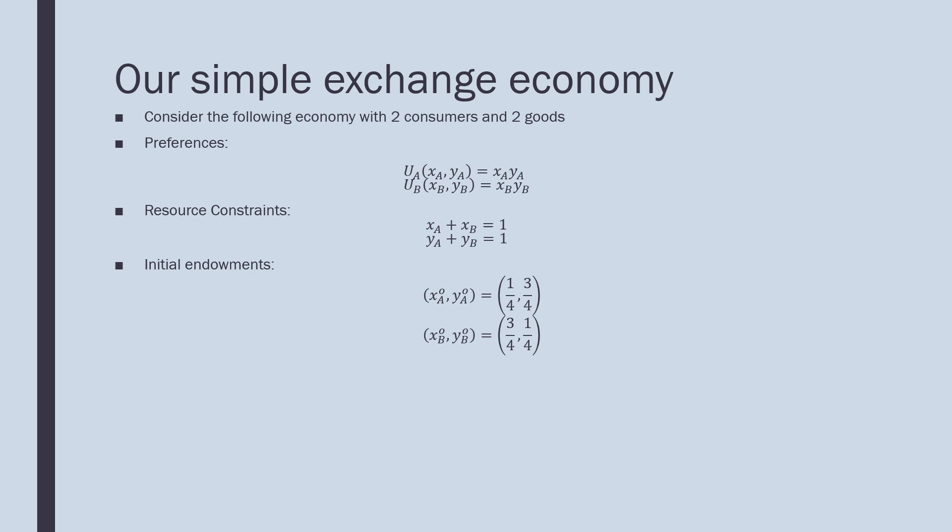A resource constraint where there's a divisible good x, which has only one unit, and one unit of y which is fully divisible. Our initial endowments are one-fourth and three-fourths for consumer A of each x and y respectively, and for consumer B he'll have three-fourths of good x and one-fourth of good y.